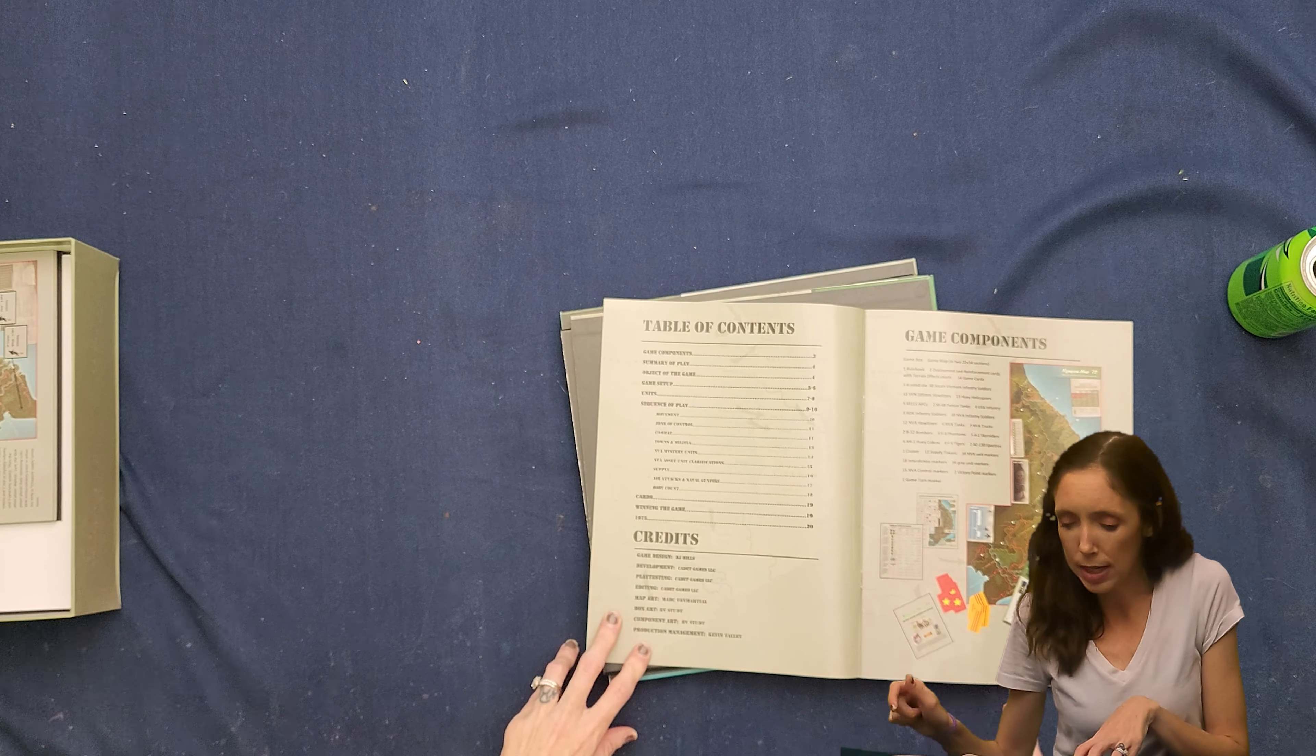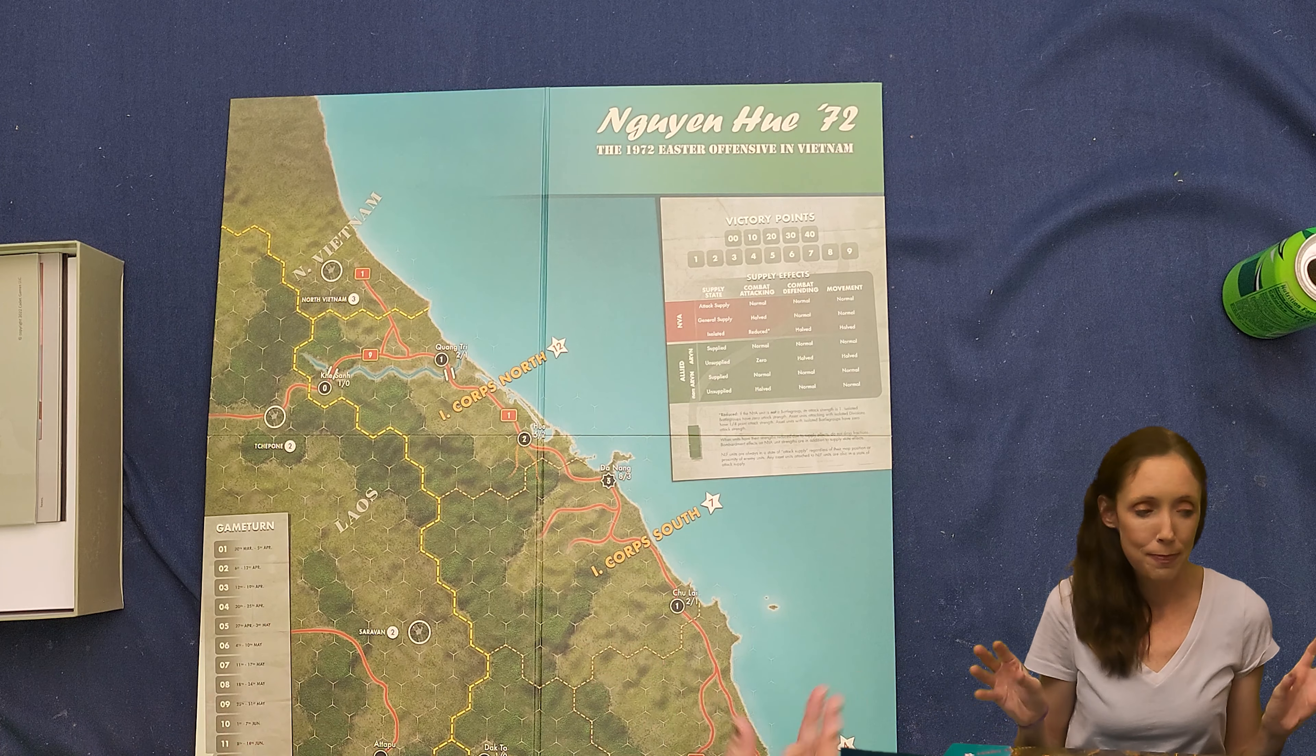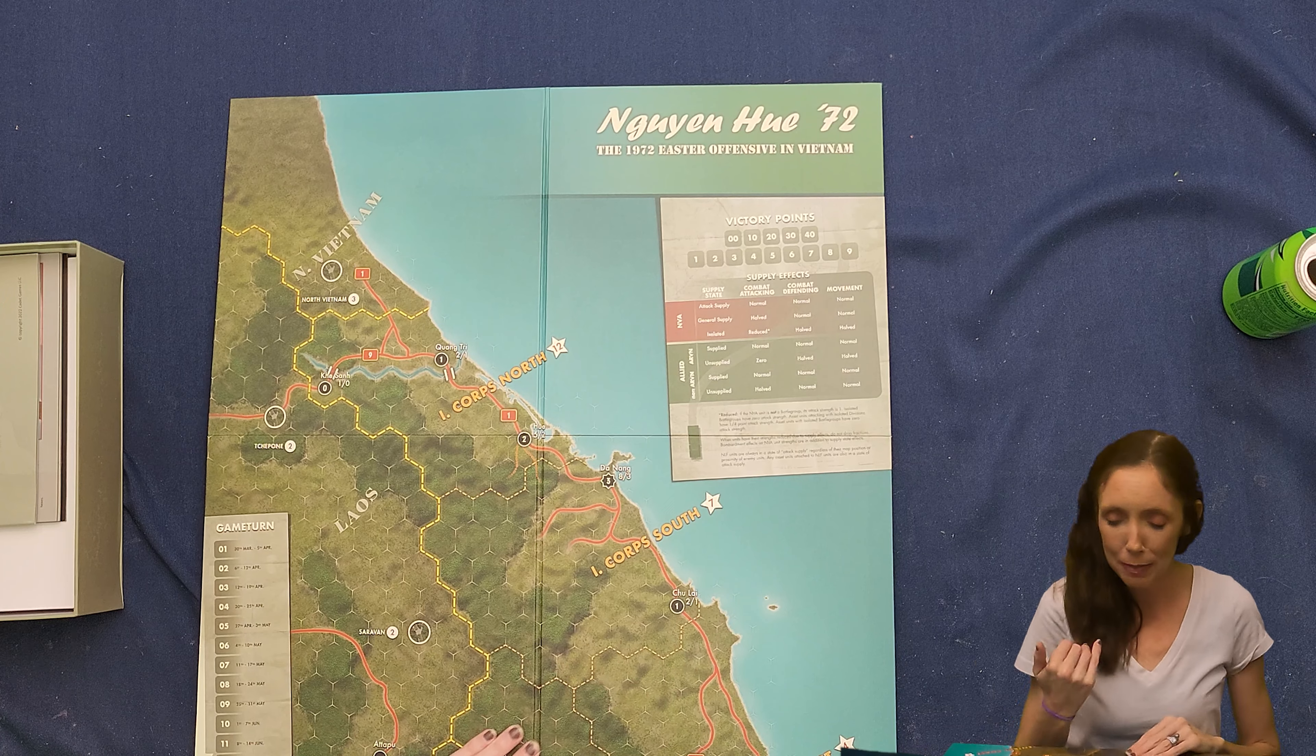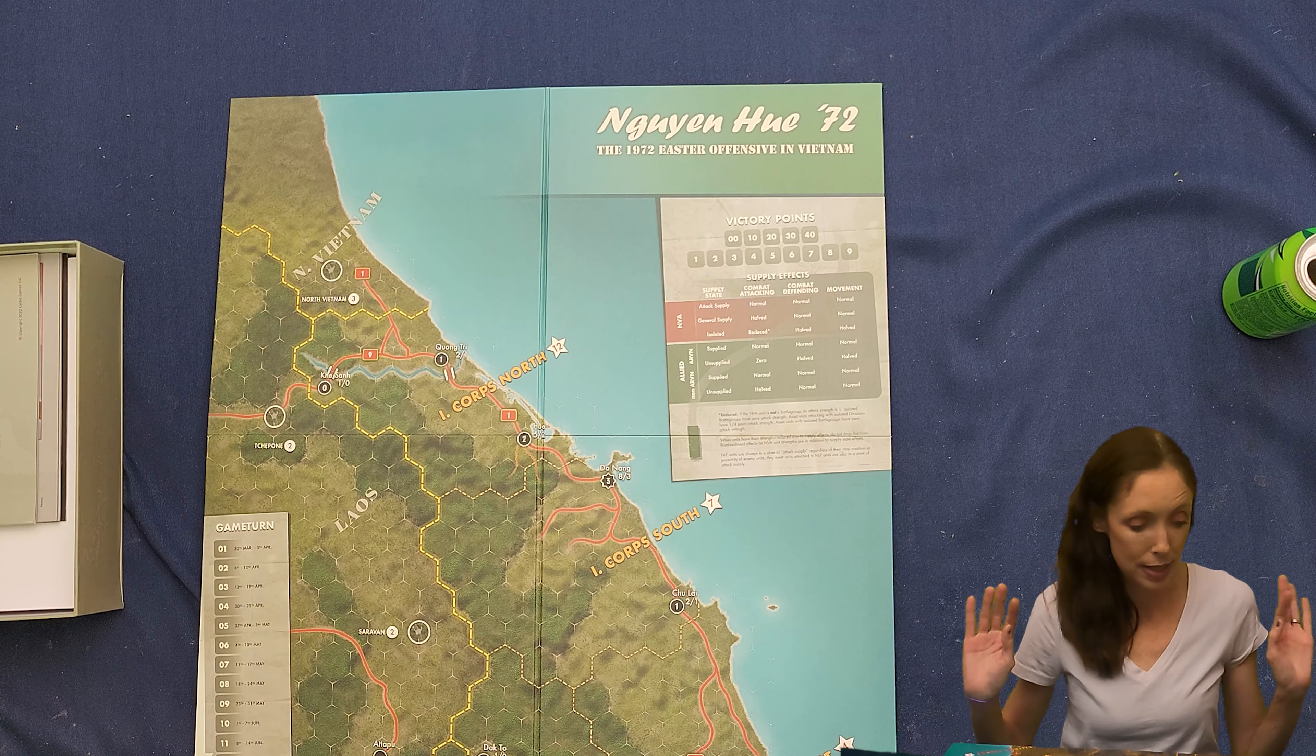So here's one. And then it says the Nguyen Hu Easter offensive in Vietnam. So we know it's in Vietnam. We know it's in 1972. We know it involves the Vietnam and the U.S. So I usually do who, when, and where. And I just nailed all of that because this game tells us all that. So no credit goes to me. That's all on the games.